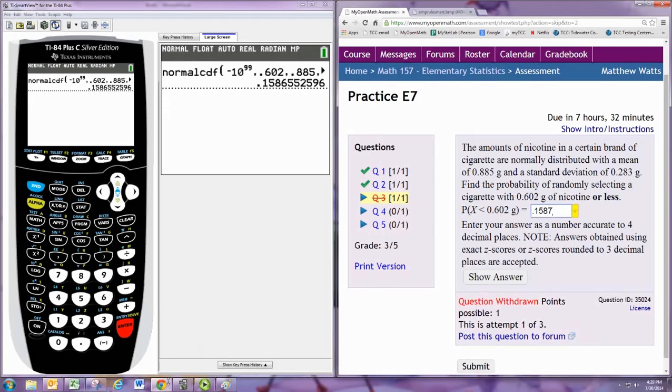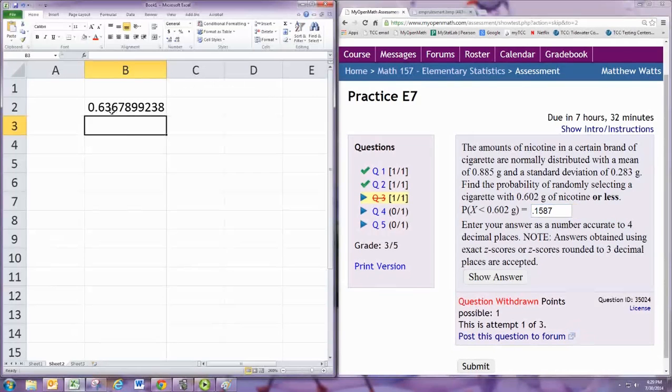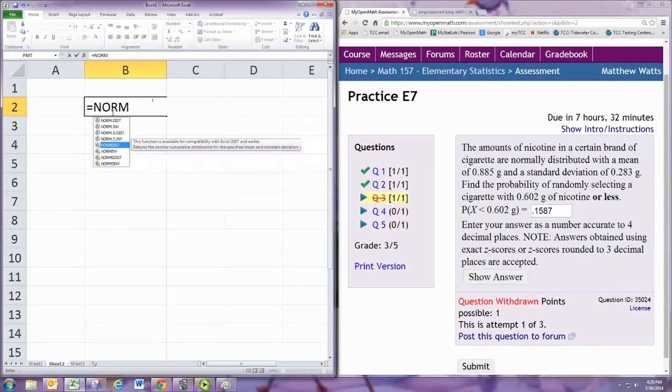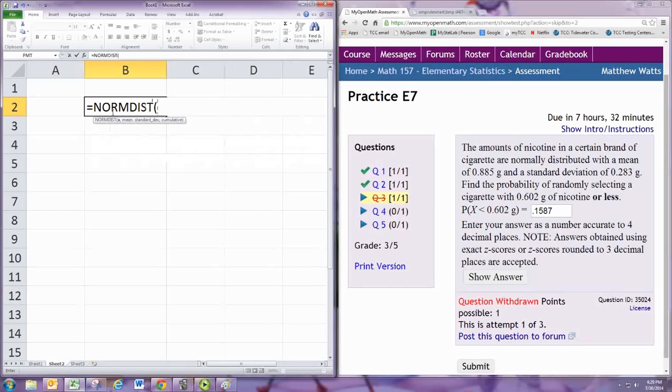Now we can do this with a spreadsheet using the NORMDIST command. We put in the value 0.602, and then the mean 0.885, then the standard deviation 0.283, and then a 1 for cumulative.